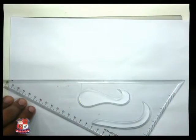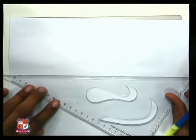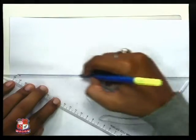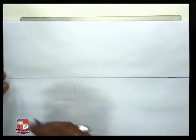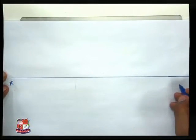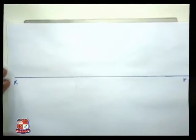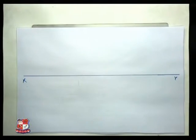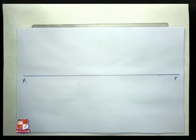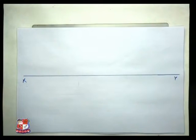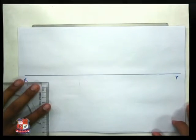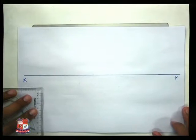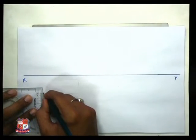First of all, every projection of a plane or a line problem will start from a XY line itself. We will draw a XY line. Now, over here we need to draw a pentagon. We can draw a pentagon using the three-circle method. The side of the pentagon is given as 30 mm.